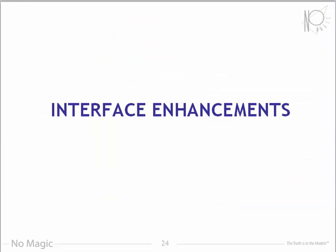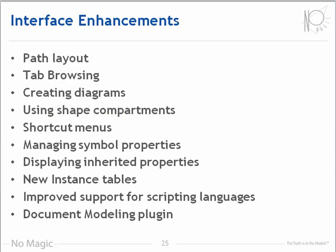In this latest release, we focused on improving aspects of our products in a way that would benefit everybody — not just a specific group, but every type of user. MagicDraw 18 has improved several user interface elements to make modeling even easier. These enhancements simplify modeling and automate common tasks. MagicDraw 18 has greatly improved automatic path layout, created a new approach to tab browsing that automates navigation between diagrams, enhanced the method for creating diagrams, made substantial improvements to compartment management, shortcut menus, and symbol properties management, enhanced specification dialogs to display inherited properties, added instance tables to manage test data and analysis examples, and created the new document modeling plugin. Please note that in 18.0 this plugin is for preview only — our target release is in 18.1.